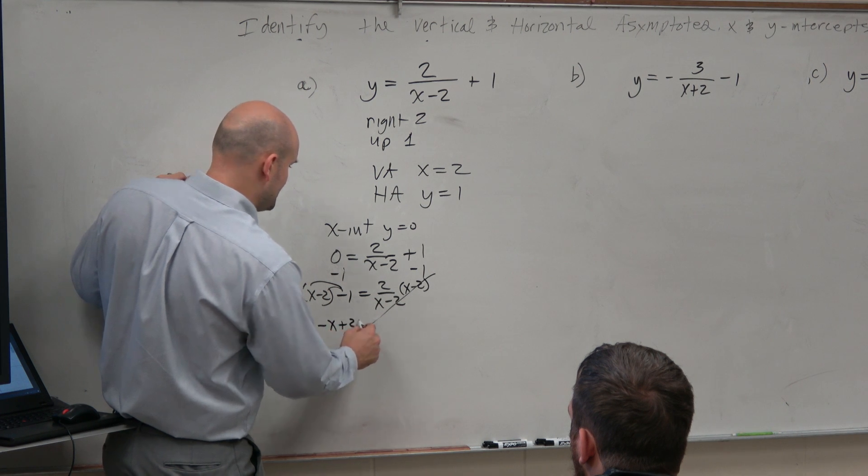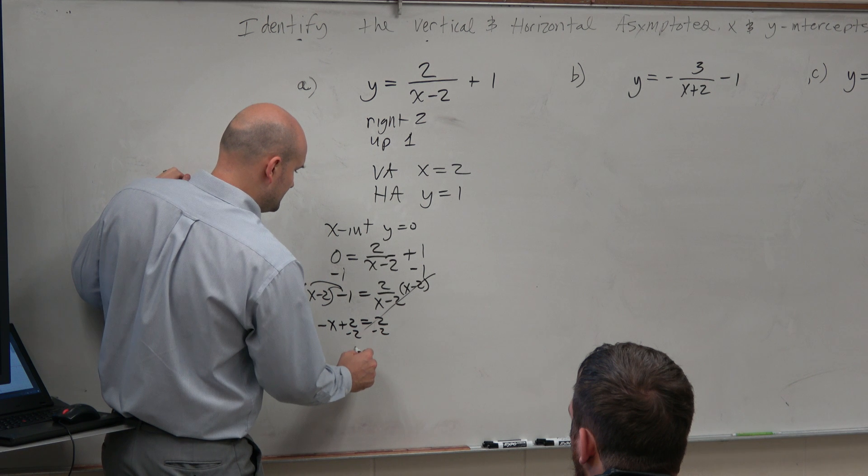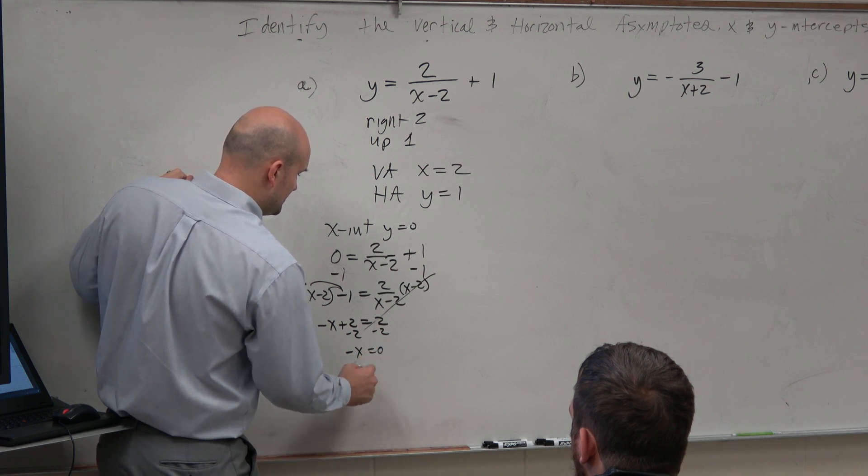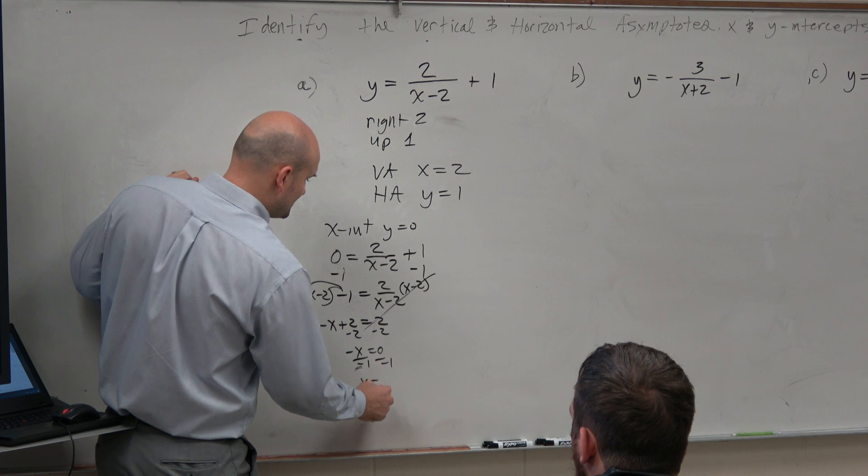Therefore, I'm left with negative x plus 2 is equal to 2. Well, now I can just subtract the 2. Negative x is equal to 0, divide by negative 1, x is equal to 0.